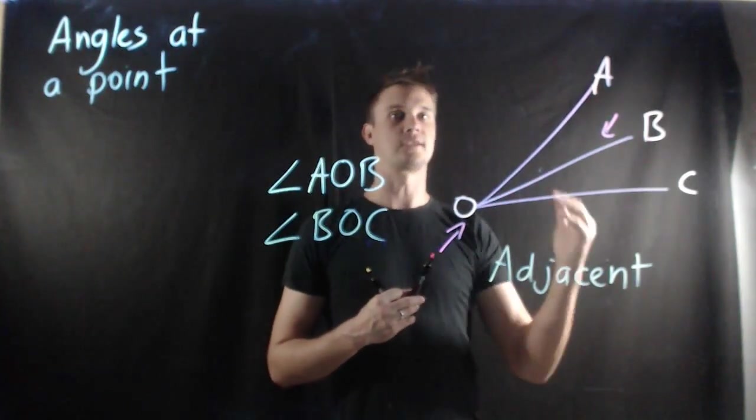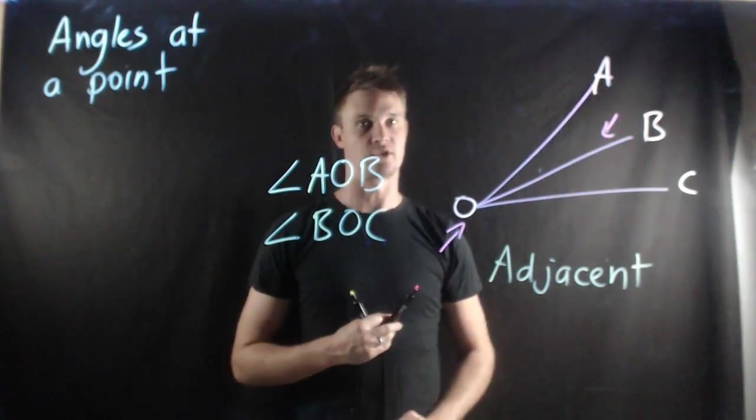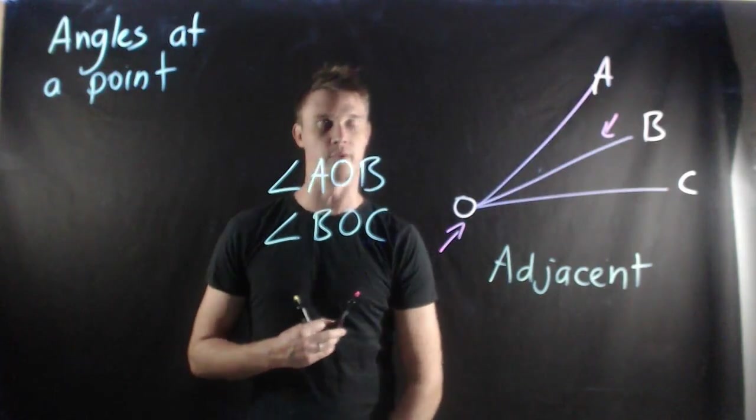Now it's important to know this because as we go further we're going to understand how we can work out unknown numbers as long as we can work out adjacent. I'm going to draw the next one up and we'll move on from there.